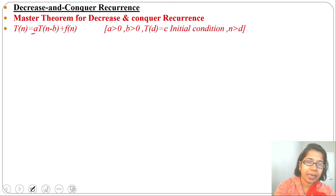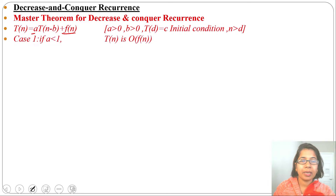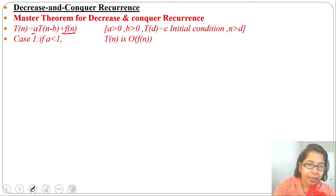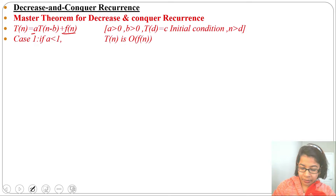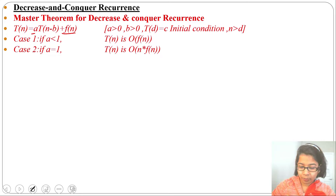We need to check the values of a and f(n). There are three cases. If a is less than 1, the running time will be O(f(n)). If a equals 1, the running time will be O(n · f(n)). If a is greater than 1, there is a third case.